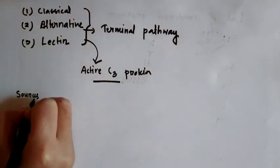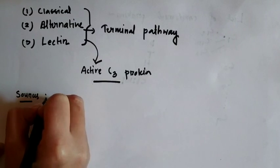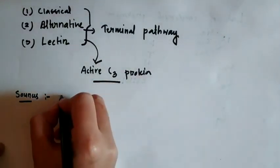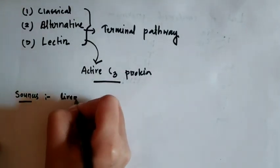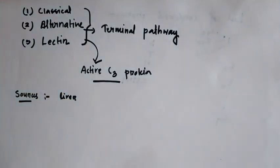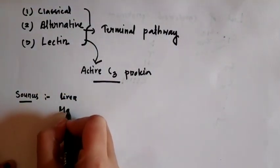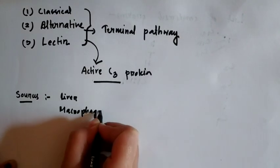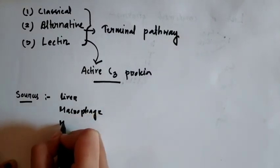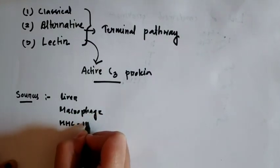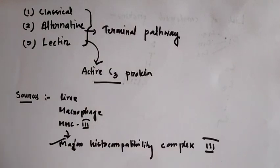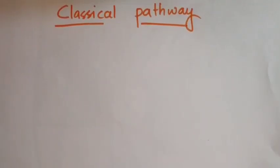Now let's see the sources of complement proteins. They can be formed in the liver, then in macrophages, and in MHC3 or major histocompatibility complex 3.